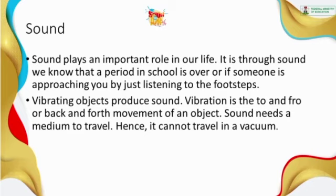Vibrating objects produce sound. Vibrating objects include a number of different things. Objects or animals produce sound through the vibration of their vocal cords. Vibration is the to-and-fro or back-and-forth movement of an object. Sound needs a medium to travel and it cannot travel in a vacuum. That's why when you hit an iron object, it makes sound — that is the medium for sound to travel and you can hear that someone is doing something.